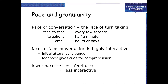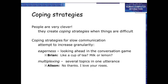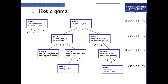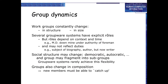Pace and granularity: the rate of turn-taking varies — face-to-face every few seconds, telephone every half minute, email over hours or days. Face-to-face conversation is highly interactive; initial utterances are vague, and feedback gives cues for comprehension. Lower pace means less feedback and less interaction. Copying strategies: people create coping strategies when communication is slow — attempting to increase granularity, eagerness, and looking ahead in the conversation. Like asking 'a cup of tea, milk or lemon?' — multiplexing several topics in one utterance. The conversation is like a game; linear text follows one path, but hypertext can follow several paths at once, with turns alternating between Allison and Brian.